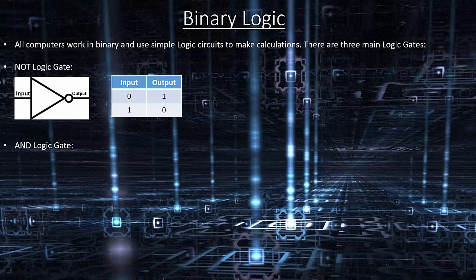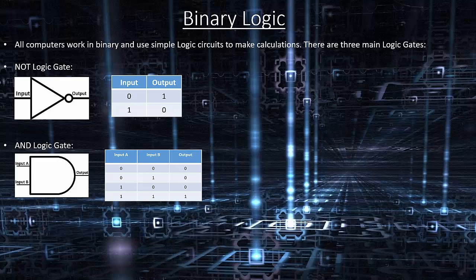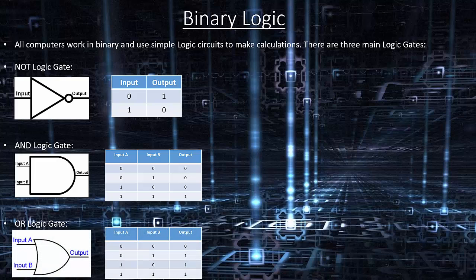AND logic gate: the output will be 0 if either input is 0. If the inputs A and B are both 1, the output will be 1. OR logic gate: if the inputs A and B are both 0, the output will be 0. If input A is 0 and input B is 1, the output will be 1. If input A is 1 and input B is 0, the output will be 1. If inputs A and B are both 1, the output will also be 1.